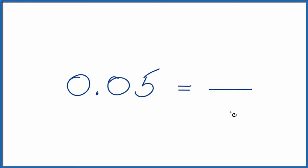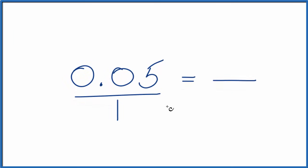So to do that, the first thing we can do is 0.05. We could call it 0.05 over 1. It's still 0.05. We're just dividing by 1. But now we have the start of a fraction.